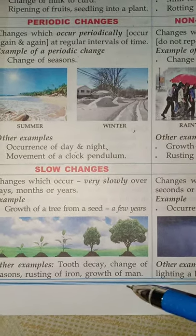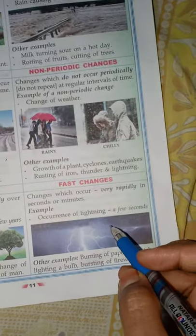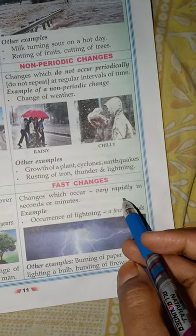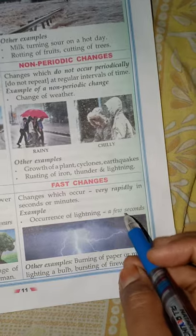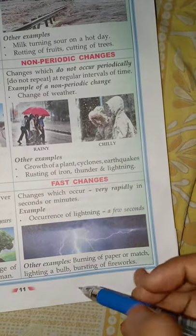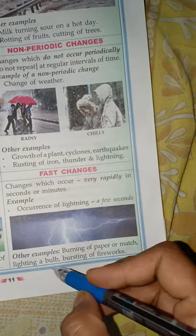These all are slow changes. Fast changes include those occurring very fast or in a fraction of seconds or minutes. Like occurrence of lightning, burning of paper, matchstick, lighting of a bulb, bursting of firecrackers. These all are the differences between fast and slow changes.